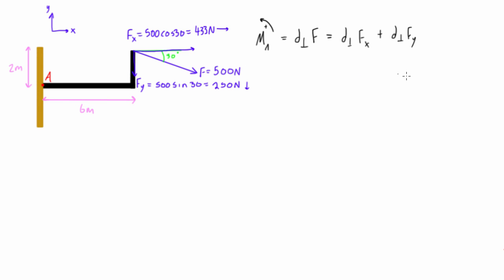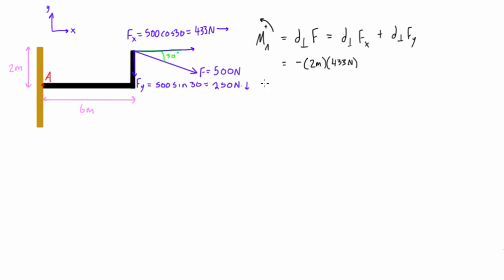Plugging that information into the formula: the line of action of the x-component is this horizontal line, so the perpendicular distance from point A to it is 2 meters. That gives us 2 meters times 433 Newtons. We have to consider the sign — if we just apply fx, the bracket would tend to rotate clockwise about point A, which is opposite our defined positive sense, so this term gets a negative sign.